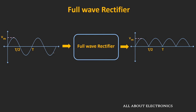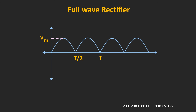If we apply the sine wave as an input to this full wave rectifier, then we will get this kind of waveform. As you can see, it completely passes the positive half cycle and it inverts the negative half cycle. So using this full wave rectifier circuit, we can get the output waveform for both half cycles.